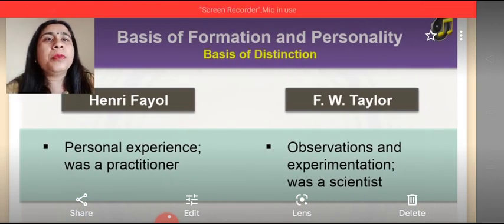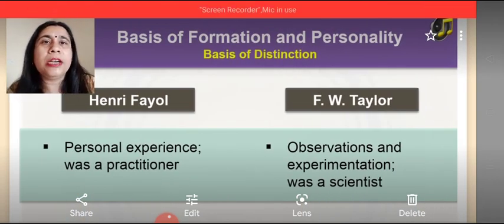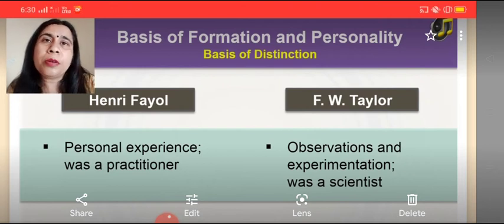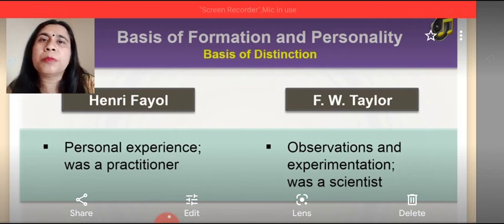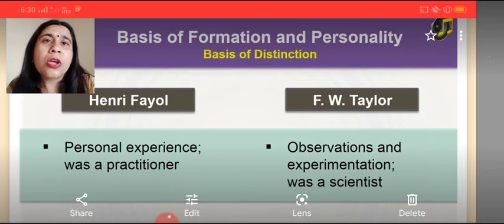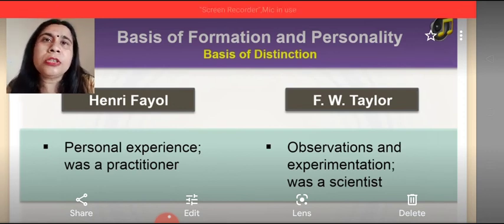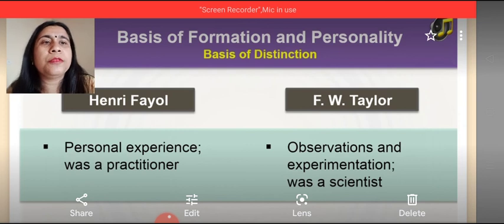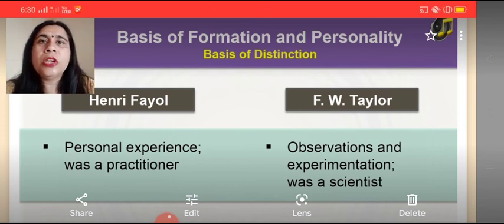On the basis of formation and their personality, Henry Fayol developed the principles of management through his personal experience — he was a practitioner. On the other hand, F.W. Taylor gave the theories of scientific management through his observations and experimentation — he was a scientist.